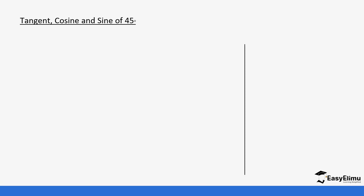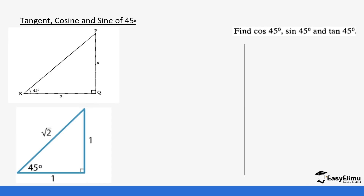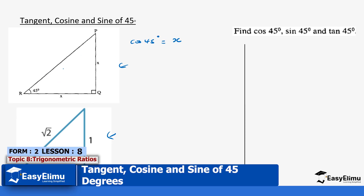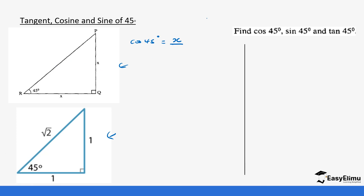So when we look at the tangent, cosine and sine of 45 degrees, first of all we'll take an isosceles right-angle triangle and look for these values. When we start with cos of 45 degrees, it's going to be adjacent — which is x — over hypotenuse. We can get the hypotenuse by taking x squared plus x squared equals the hypotenuse squared.